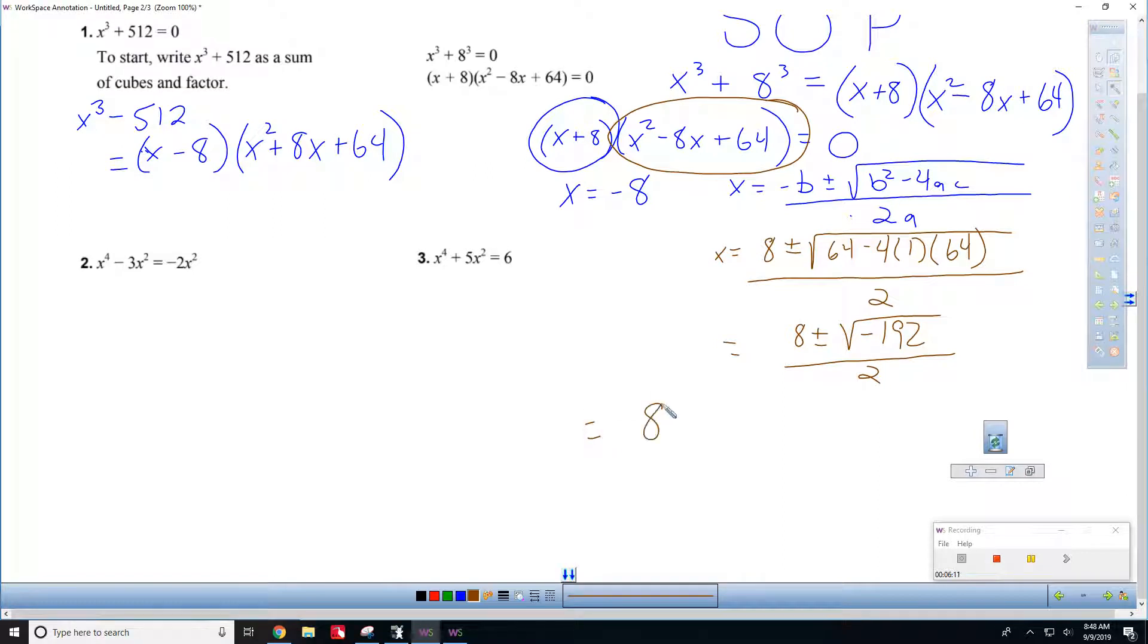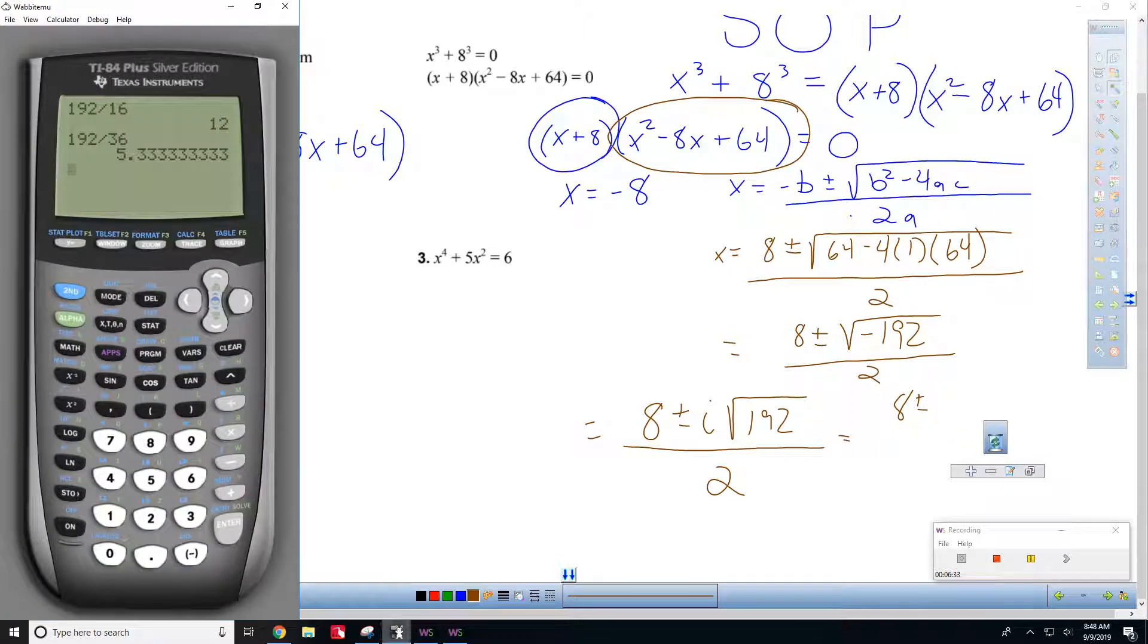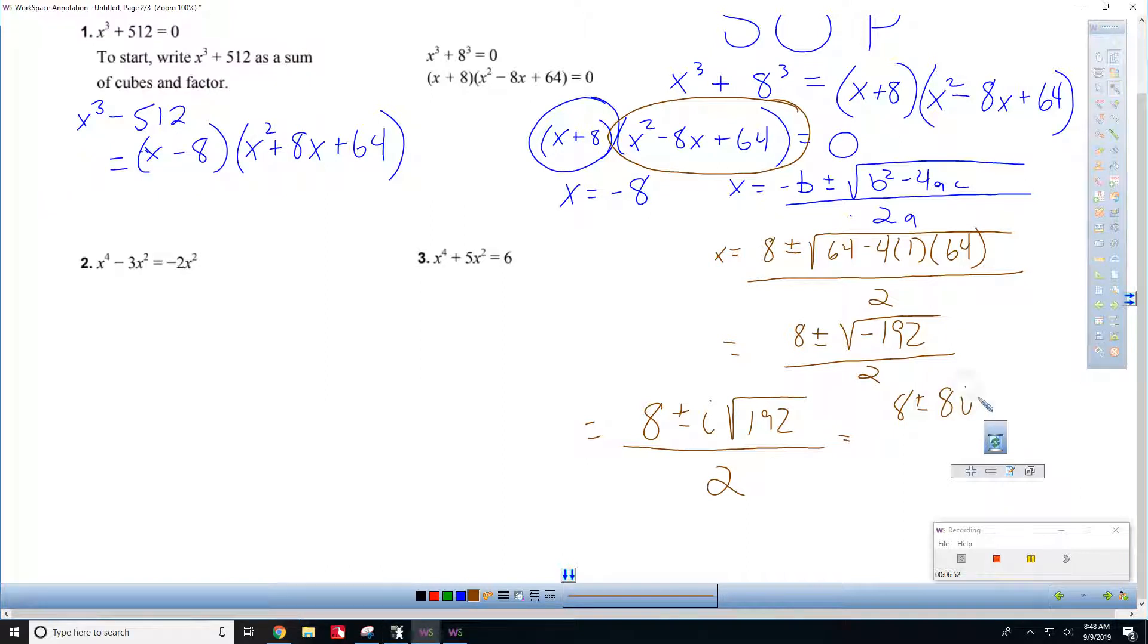If you wrote this answer like this, 8 plus or minus i radical 192 over 2, I would take that. Okay. Now, we are just working on something different which is simplifying this. So, it's 8 plus or minus... What did it say 192 divided by 16 was? 12. What is 16 times 4? So, it's 192 divided by 64. There it is. It's 3. So, what this is is 8 plus or minus 8i radical 3 all over 2. So, the best answer for this one is 4 plus or minus 4i radical 3.